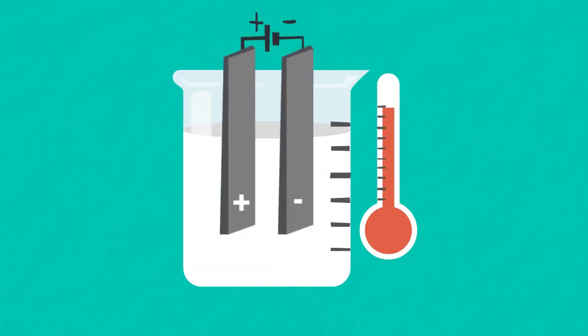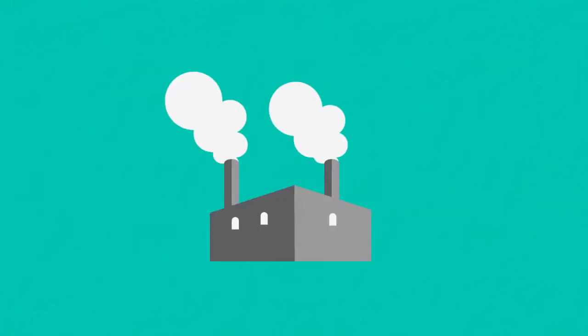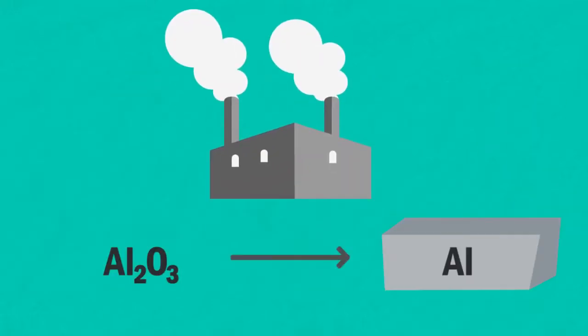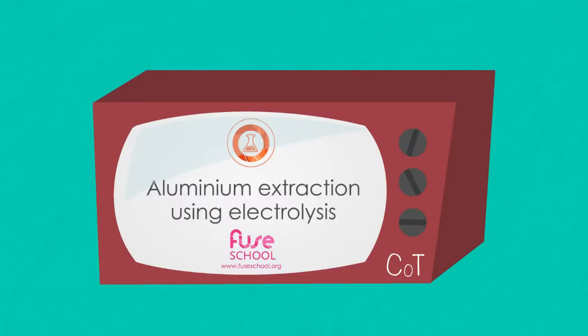So remember, electrolysis will cause any molten ionic compound to decompose into its elements. And the process is actually quite useful and is used a lot in industrial processes. One such example is the industrial extraction of aluminium from aluminium oxide. And it's explained in more details in our lesson Aluminium Extraction Using Electrolysis.